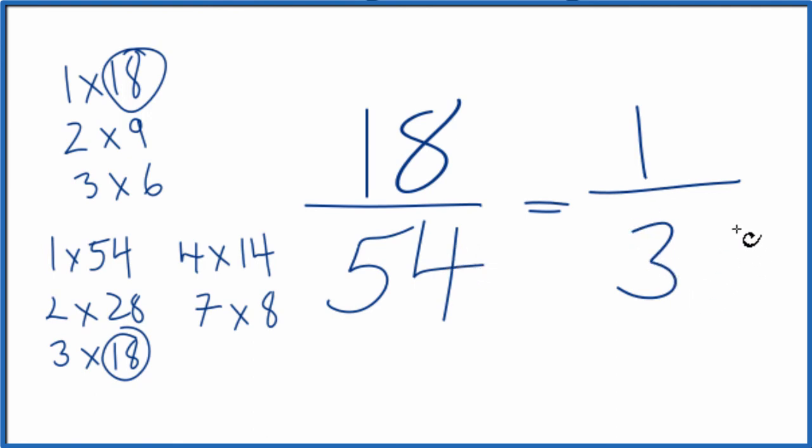There is one other way that you could try to simplify this if you didn't know that 18 went into 54 three times. You could just divide both of these by 2 since they're even numbers. So 18 divided by 2 is 9, and then 54 divided by 2 is 27.